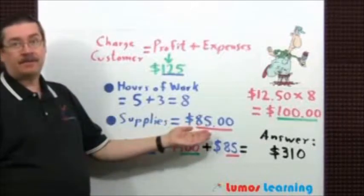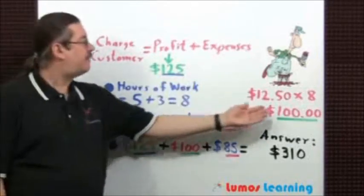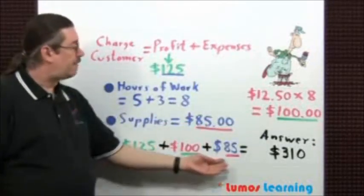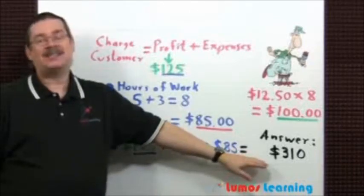Supplies is $85. Now just add these three values together: $125 plus $100 plus $85. The final answer is $310.